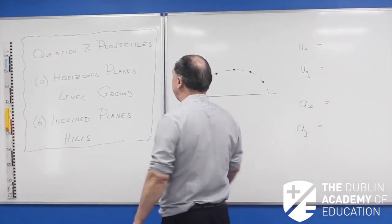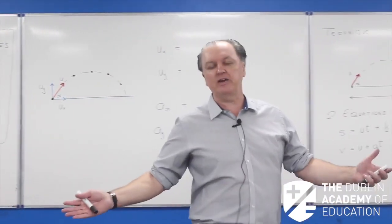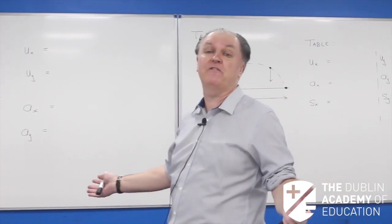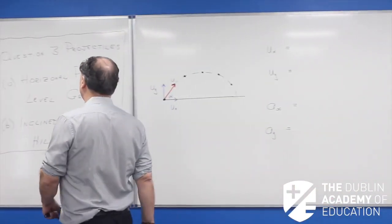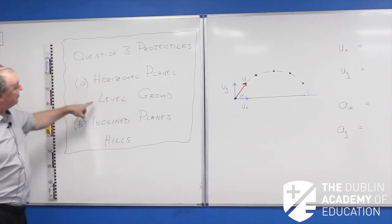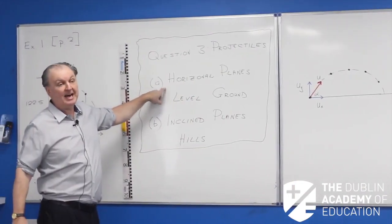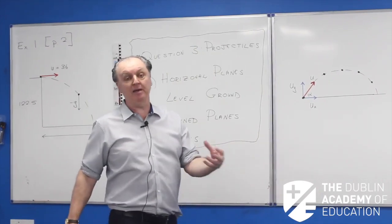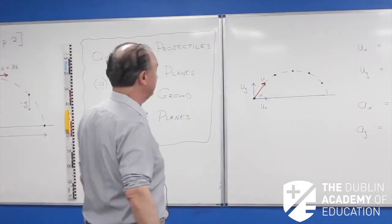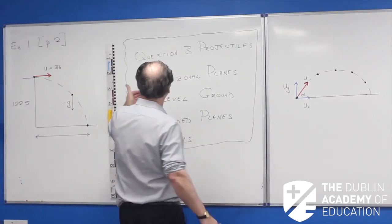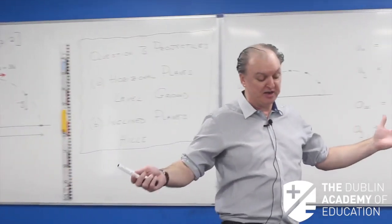Part B is about inclined planes — essentially firing missiles off hills. Today I'm going to do five lessons on horizontal planes. By the end of this, you should be able to attempt every Part A question from the Leaving Cert from 1996 up to 2019.